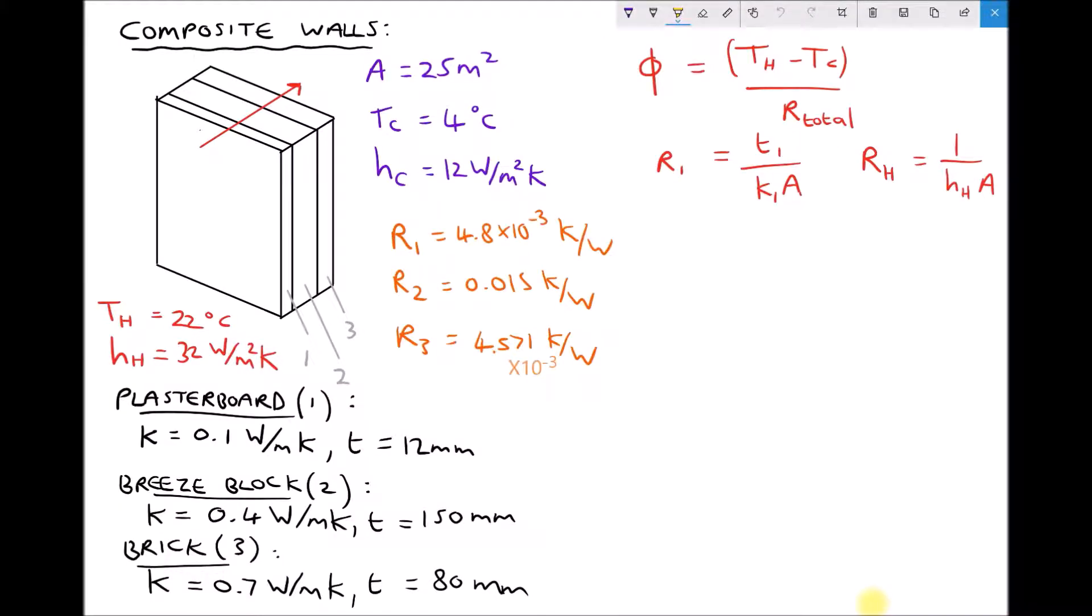In the previous video, we calculated the rate of heat transfer through a composite wall, but we only considered conduction through each of the layers. So in this video, we're also going to consider the surface heat transfer coefficients. Now just to explain what we mean by this.